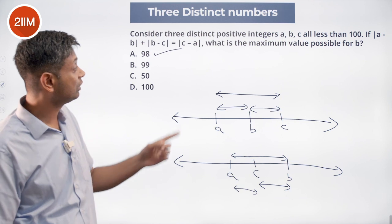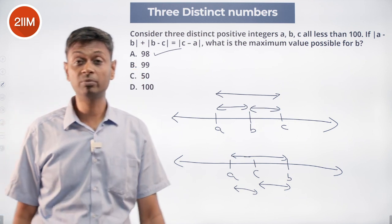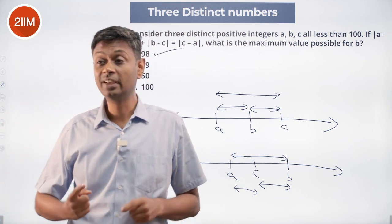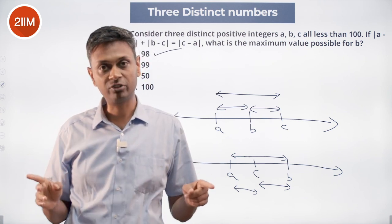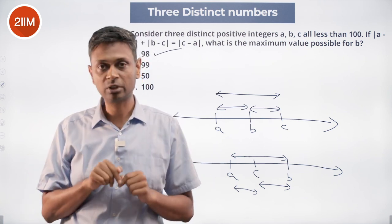Take away from here: if you know modulus of a minus b plus modulus of b minus c is equal to modulus of c minus a, then we can say for sure that b sits in between a and c. B is the middle number. Only then this will work.